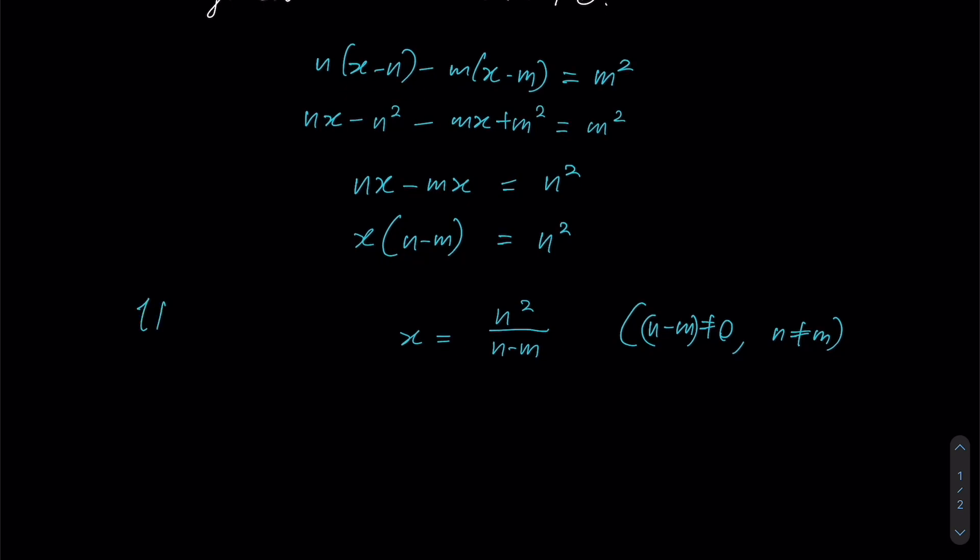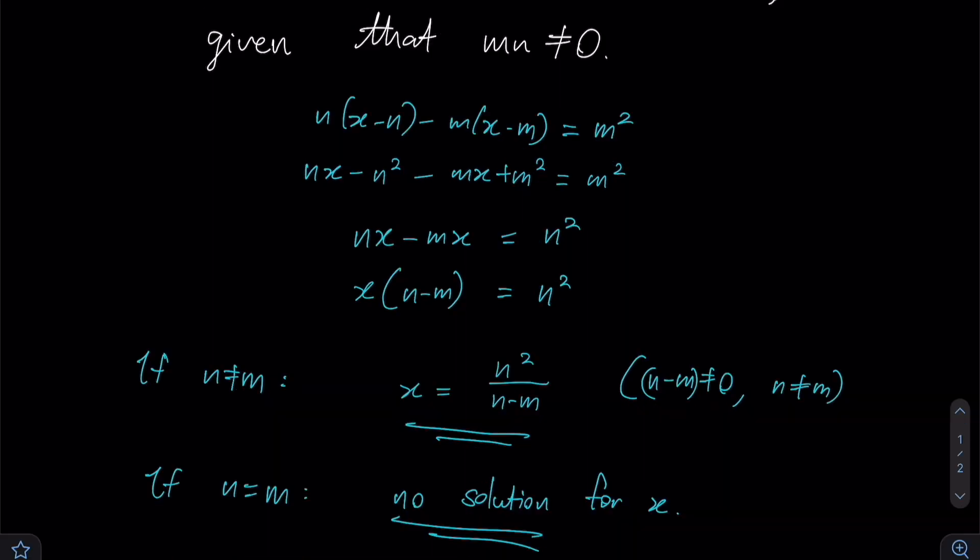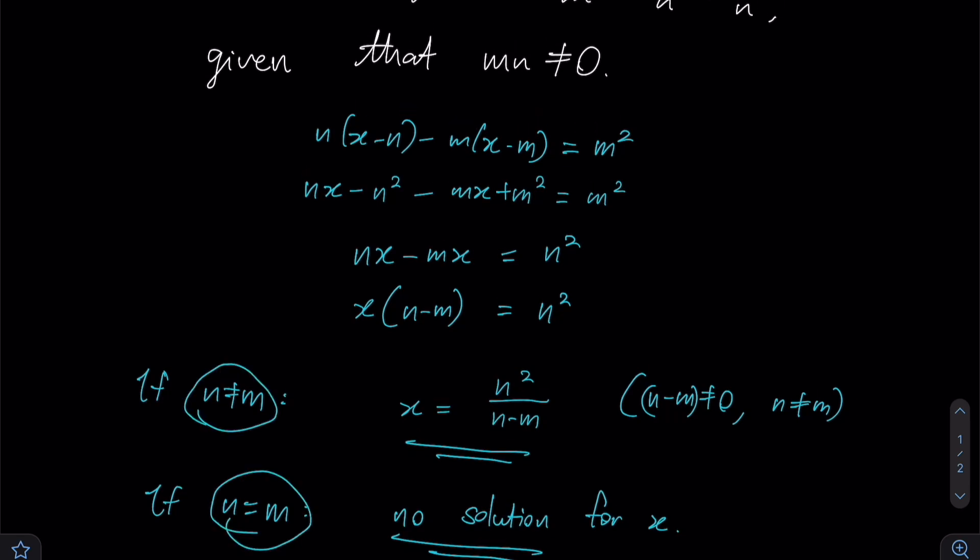So therefore, if n is not equal to m, then this is your solution for x. But it is necessary that you also state the opposite, which means that if n does happen to equal to m, then there will be no solution for x. So hence, for questions like these involving the solution for x, you have to consider all possible scenarios, and you have to include a discussion on the possible parameters for these two constants over here, keeping in mind that we're trying to make x the subject of the formula.